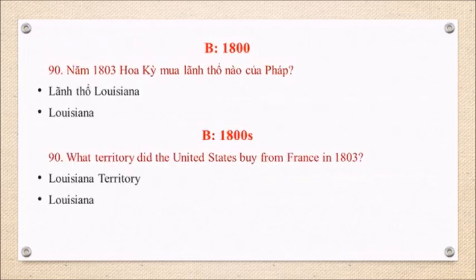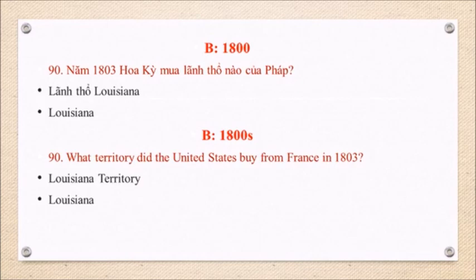B. 1800s. Question 90: What territory did the United States buy from France in 1803? The Louisiana Territory.